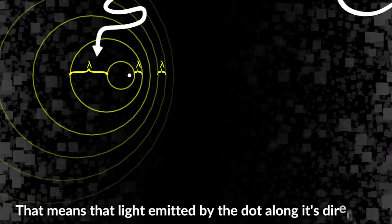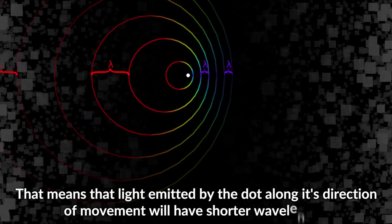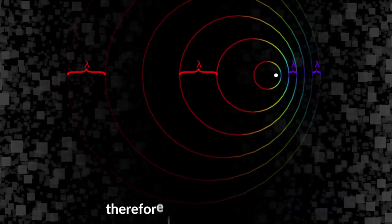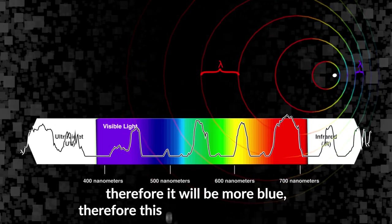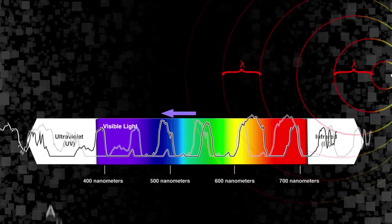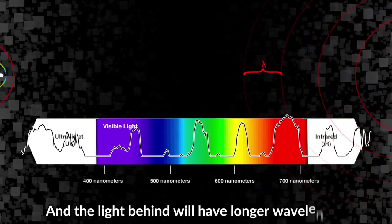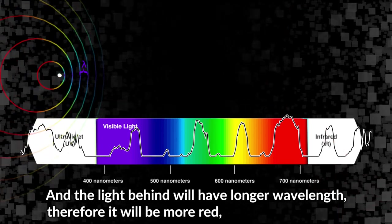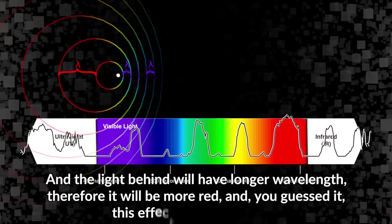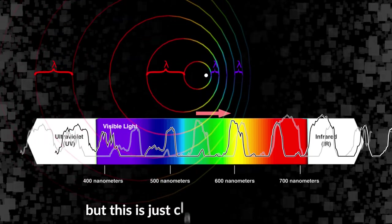That means that light emitted by the dot along its direction of movement will have shorter wavelength according to a static observer, therefore it will be more blue - therefore this effect is called blue shift. And the light behind will have longer wavelength, therefore it will be more red, and you guessed it, this effect is called red shift.